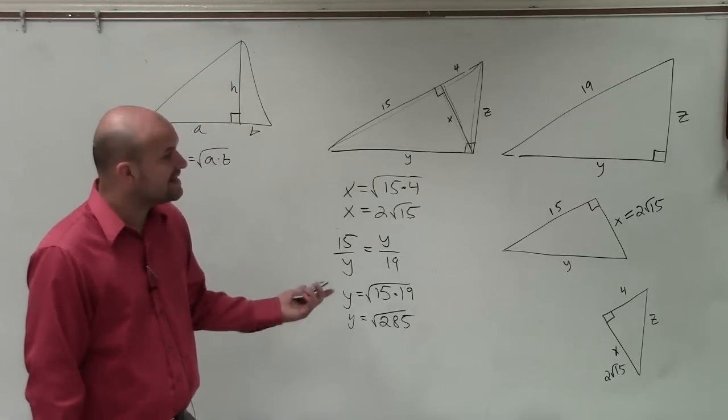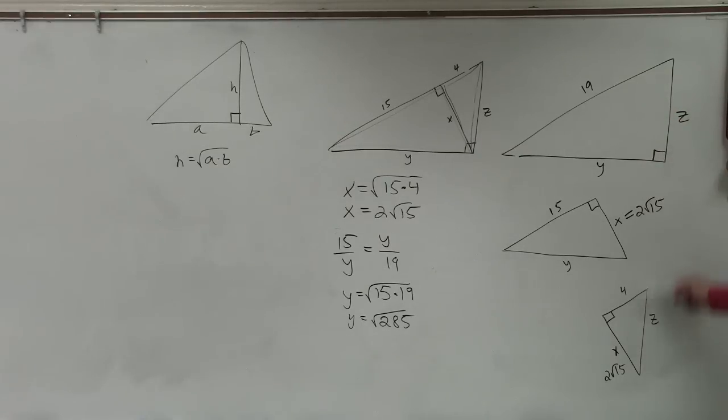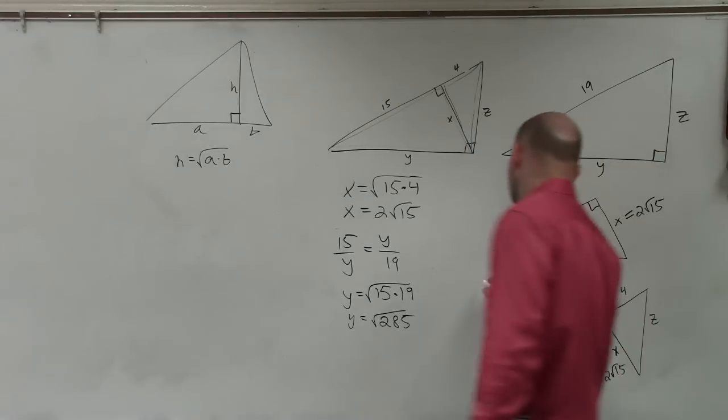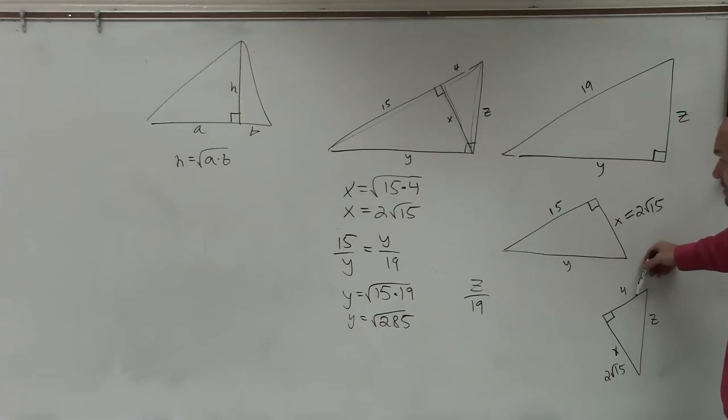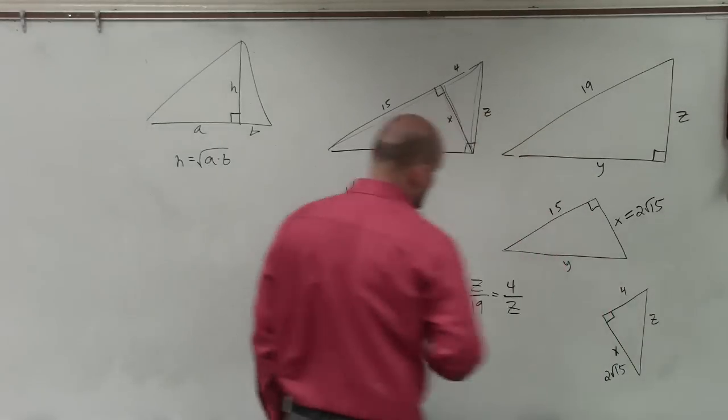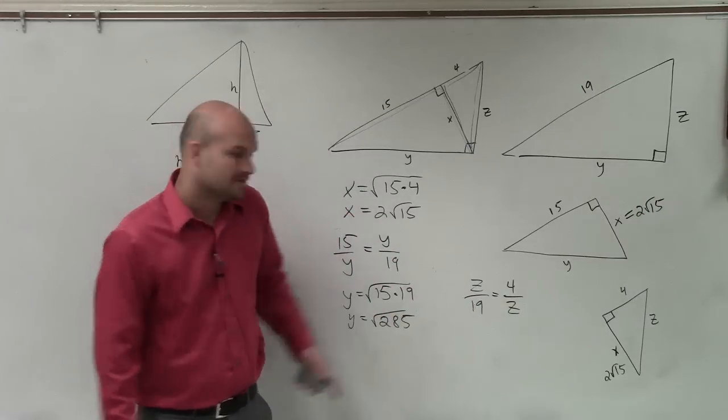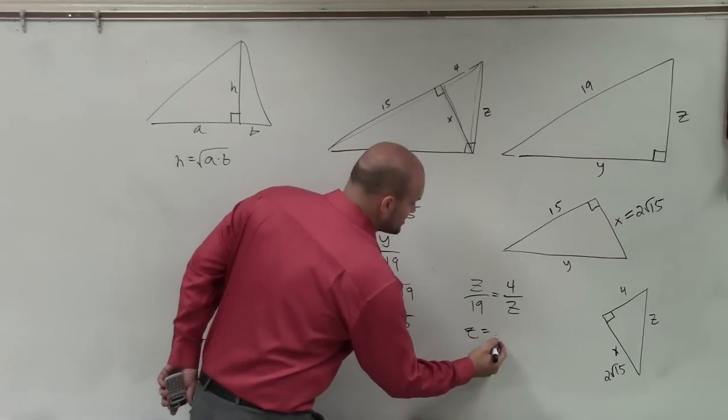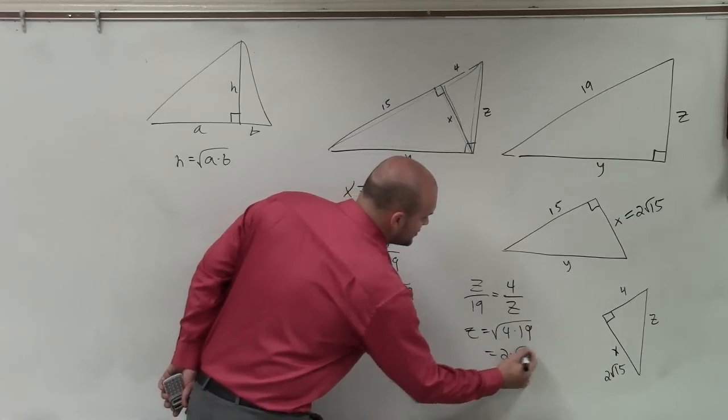So now we need to figure out what z is, right? So let's go and compare this triangle to that triangle. Z is the hypotenuse for this triangle. Z is the hypotenuse for that triangle, correct? So I can say z is to 19 as 4 is the short leg, right? As, what's the short leg of this triangle? Z as 4 is to z. Again, do you guys notice how we have them being exactly the same? So therefore, z equals the square root of 4 times 19. We can now simplify that to 2 times the square root of 19.